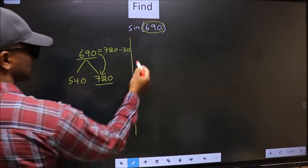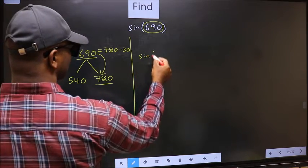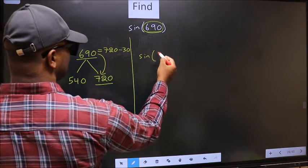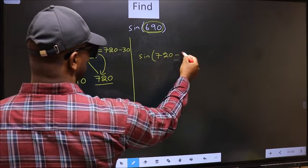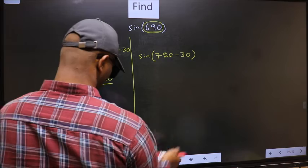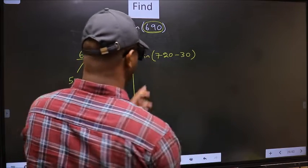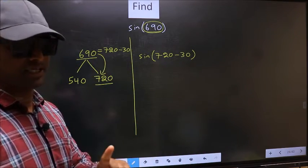So this will become sin. In place of 690, now we should write this 720 minus 30. This is your step 1.